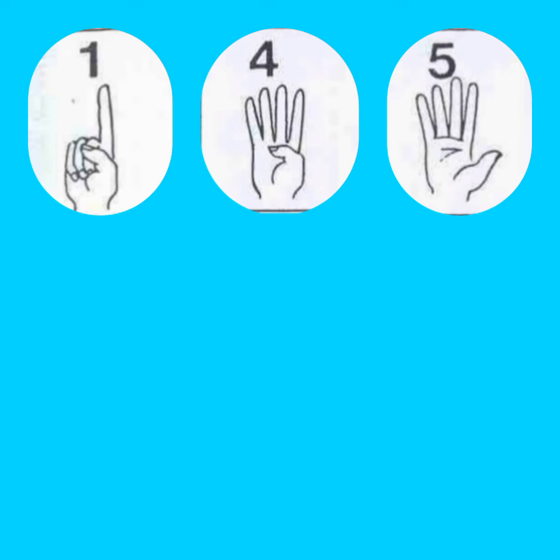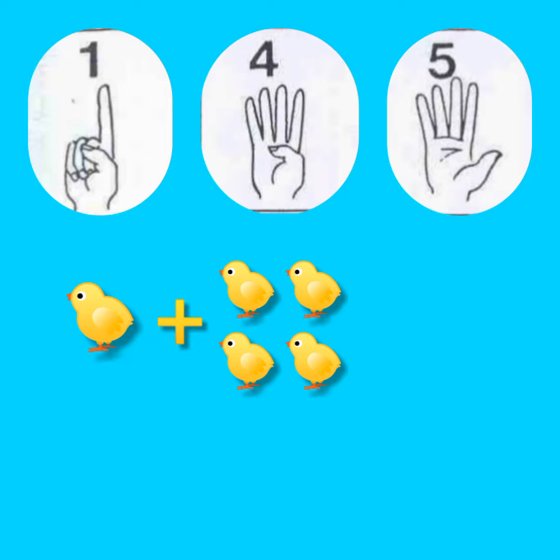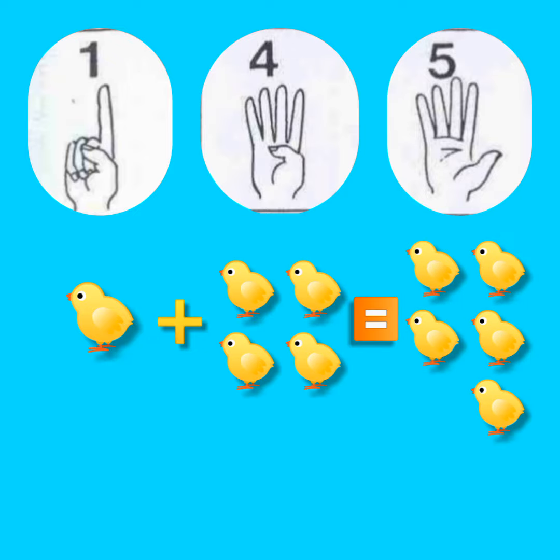Question number four. One chick plus four chicks equal to five chicks.